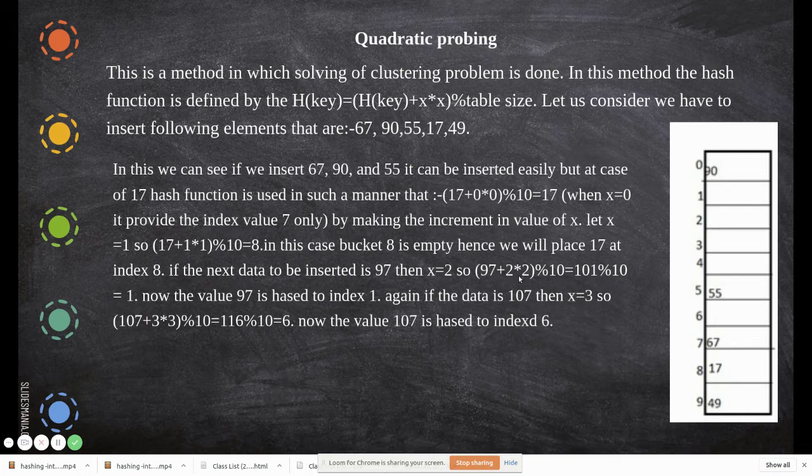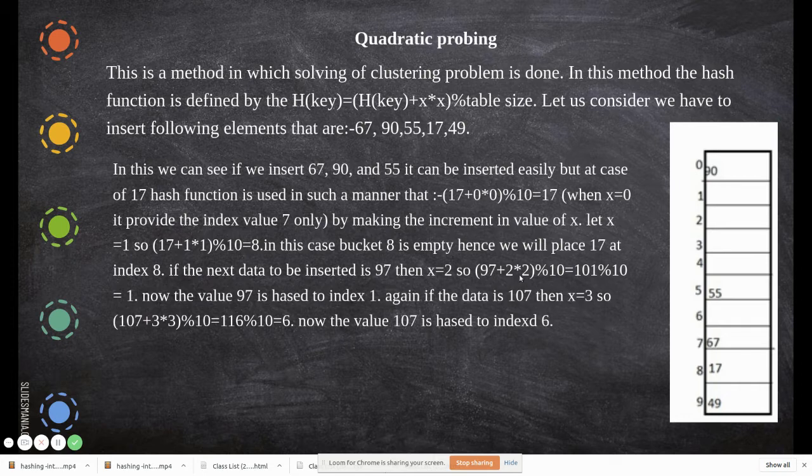So 2×2 is 4. Therefore (97+4) which is 101, and 101 mod 10 generates 1. So you have to keep 97 at index 1.